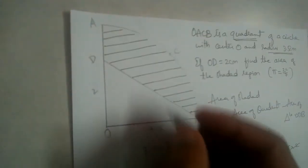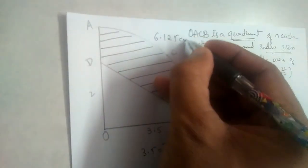So area of the shaded region is 6.125 centimeters square.